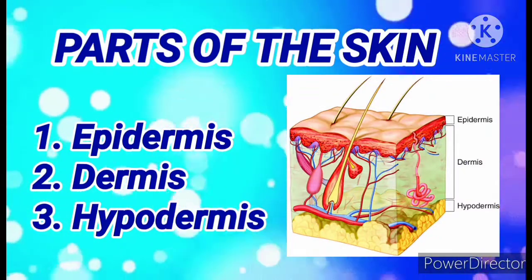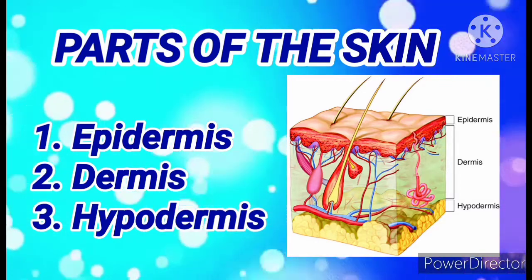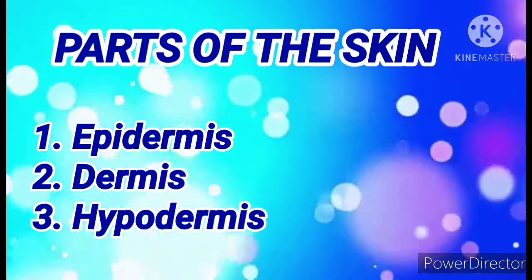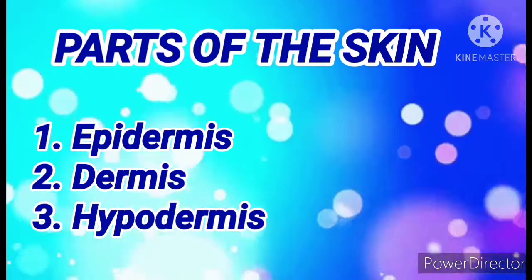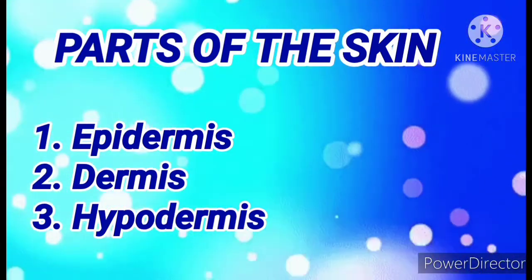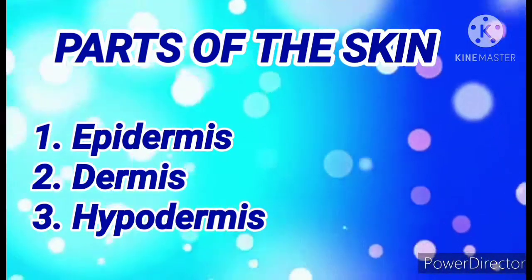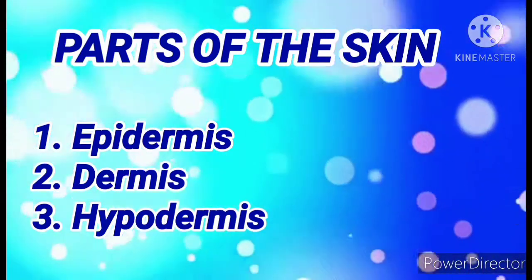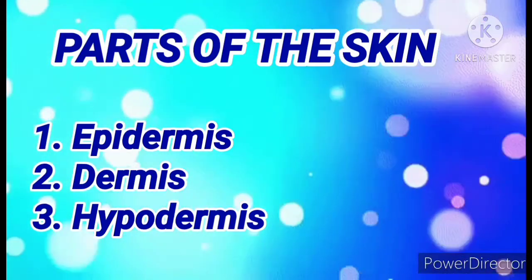Our skin has layers. First is the epidermis — the outermost layer of the skin. It prevents microorganisms and water from entering the skin and protects the deeper living layer. Under the epidermis is the dermis, also called the corium, which contains our blood vessels, lymph vessels, nerves and nerve endings, sweat and oil glands, and hair follicles.